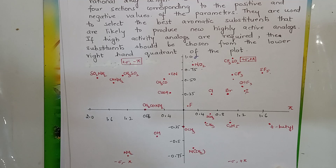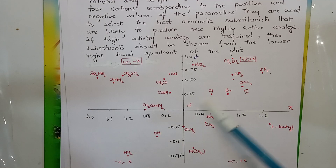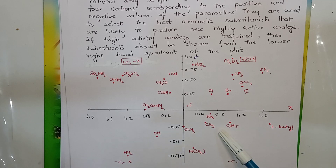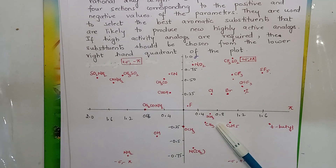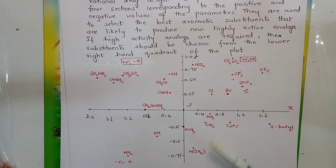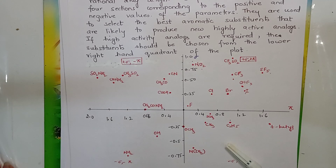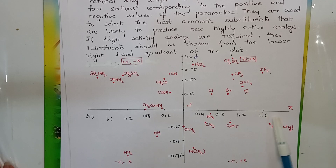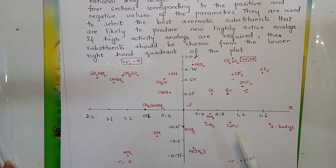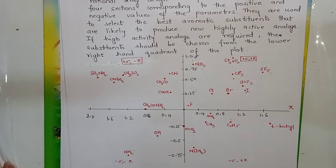Thus this is one of the best methods to achieve results where we get an increase in biological activity. Based on these requirements, we can use the values which are already given in Craig's plot. Now if high activity analogs are required, the substituents should be chosen from the lower right-hand quadrant of the plot. These values have already been plotted by scientists and given, so we can directly use them whenever we need.